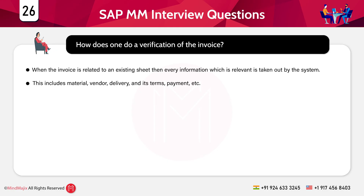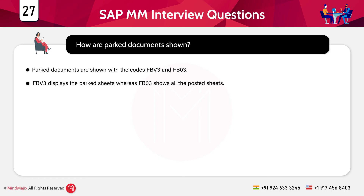The next question is: how does one do an invoice verification? When an invoice is related to an existing document, all relevant information is retrieved by the system — including material, vendor, delivery terms, payments, and so on. One enters the invoice and the system calculates the account tax, discount, and relevant corrections. Once the invoice is posted, data such as the average price is recognized.